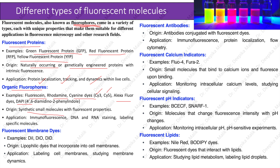Organic fluorophores — examples include fluorescein, rhodamine, cyanine dyes (Cy3 and Cy5), Alexa Fluor dyes, and DAPI. These are synthetic small molecules with fluorescent properties used in immunofluorescence, DNA and RNA staining, and labeling specific molecules. Fluorescent membrane dyes — examples include DiI, DiO, and DiD — are lipophilic dyes that incorporate into cell membranes and are used for labeling cell membranes and studying membrane dynamics. Fluorescent antibodies are antibodies conjugated with fluorescent dyes, used in immunofluorescence, protein localization, and flow cytometry.